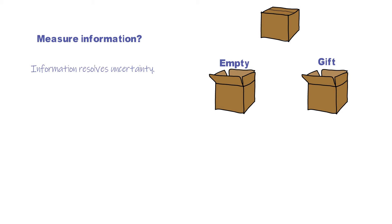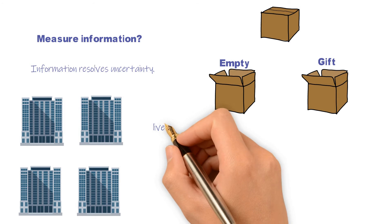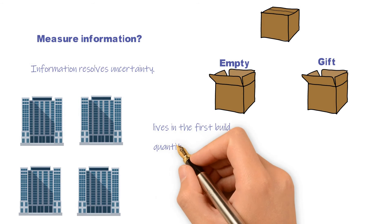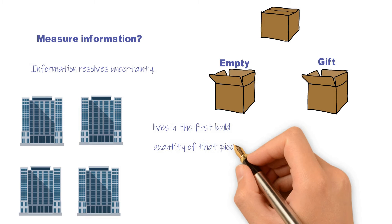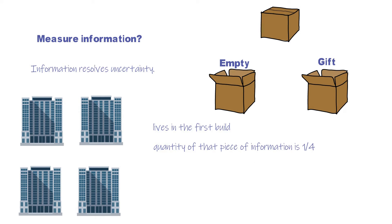Let's see an example. When you want to see a friend who lives in a hotel, at the moment that hotel has four buildings, each building has 100 rooms. You remember that he told you he lives in the first building. Then the quantity of that piece of information is one-fourth, since it narrowed down to just one building and there are four buildings you need to consider before knowing that information.